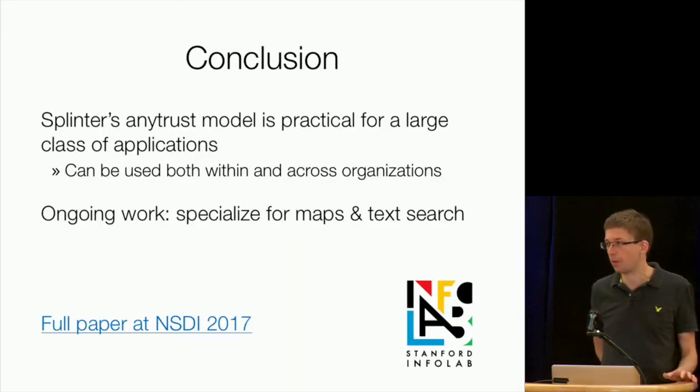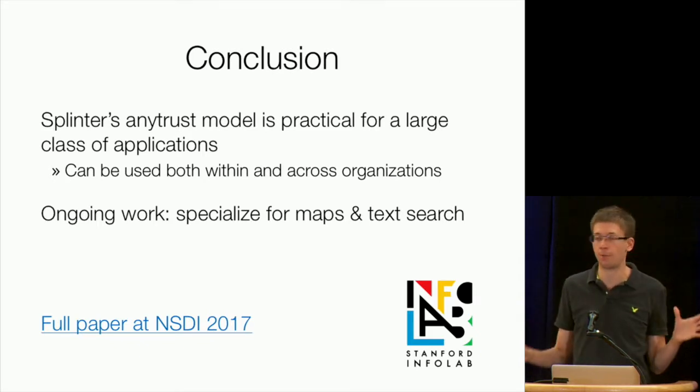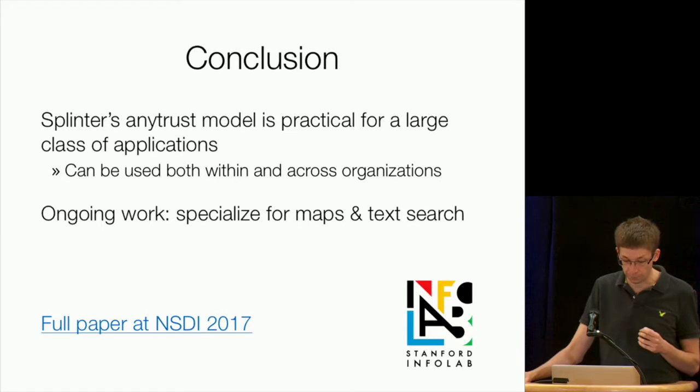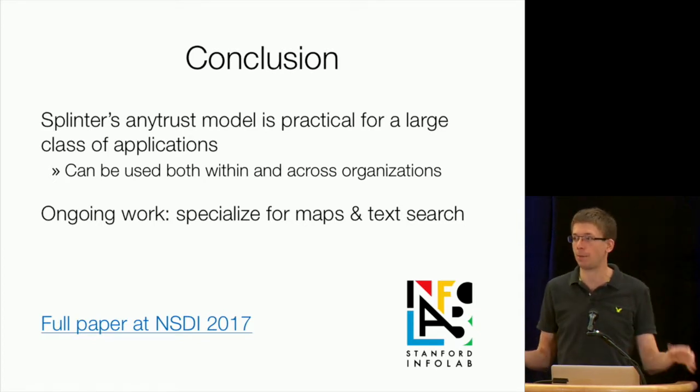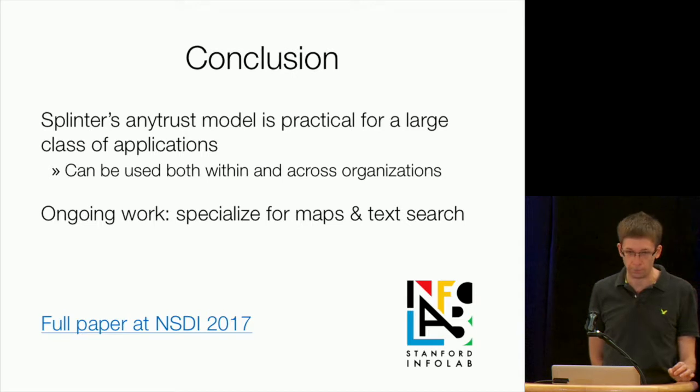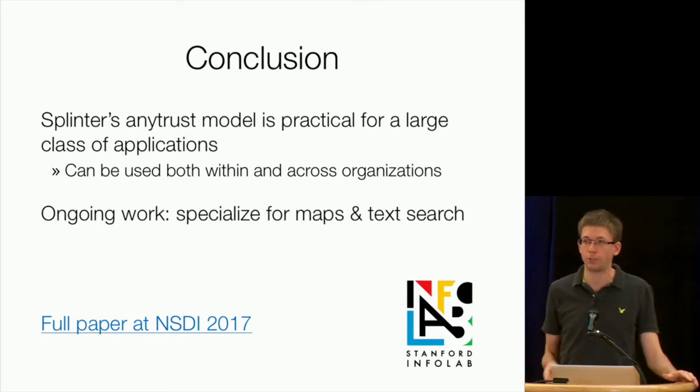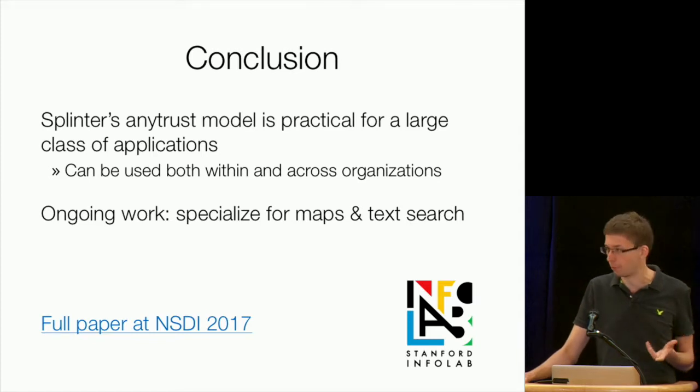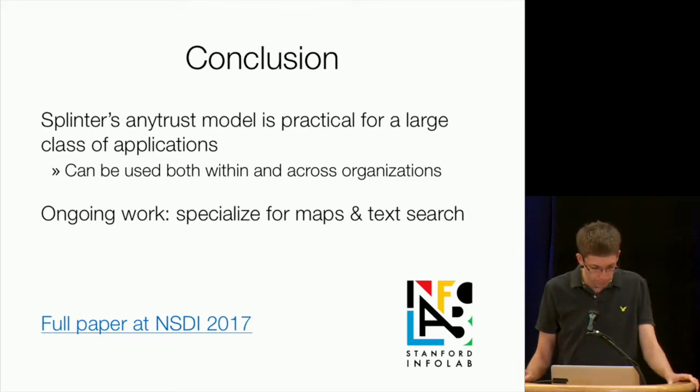Okay. So to conclude, this AnyTrust model where you have a bunch of providers of the same data set and you just need one of them to be honest is very practical. Especially compared to stuff like garbled circuits or other ways of computing on encrypted data, it's very practical for a large class of applications. And again, as I'm saying, the reason I'm excited about these is that these applications are small data. They're not going to get bigger over time. So even something that takes, say, 10 seconds today is going to be extremely practical in the future. And we think it can be used both within an organization, say, with geographically distributed servers and across organizations. And in ongoing work, we're actually trying to specialize this idea more for specific types of data that are expensive to create, such as maps or text search. So we think we can come up with even faster protocols for some of these. And if you want to find out more about it, we have a full paper that appeared at NSDI just a few weeks ago. Thanks.